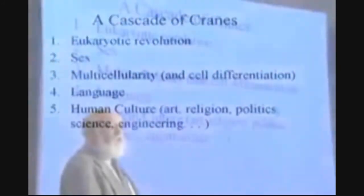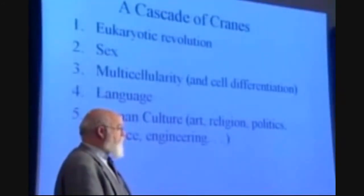Daniel Dennett says it takes some heavy lifting in the form of research and development in order to explore design space adjacent to existing gene pools. That heavy lifting requires what he calls cranes. The basic idea he's talking about is illustrated in this video. Around the same time he was writing about this, a wonderful book was published by one of his favorite evolutionary biologists, John Maynard Smith, writing with the Hungarian scientist Eörs Szathmáry: The Major Transitions in Evolution. Each one of those major transitions is one of Dennett's cranes — a Maynard Smith–Szathmáry transition.